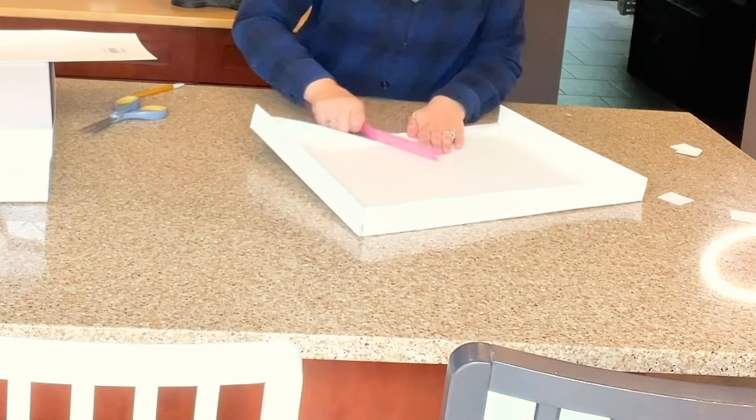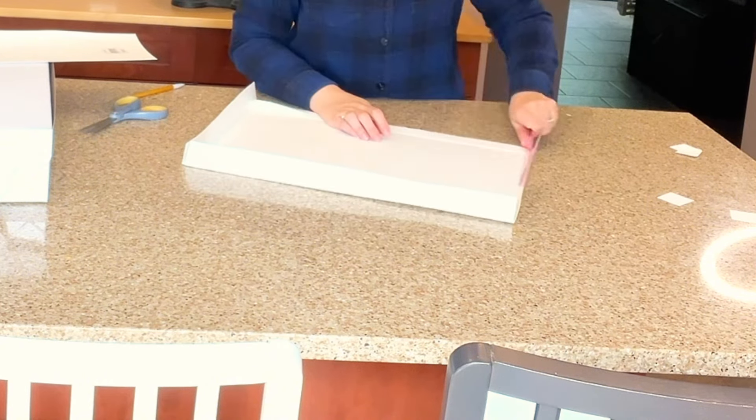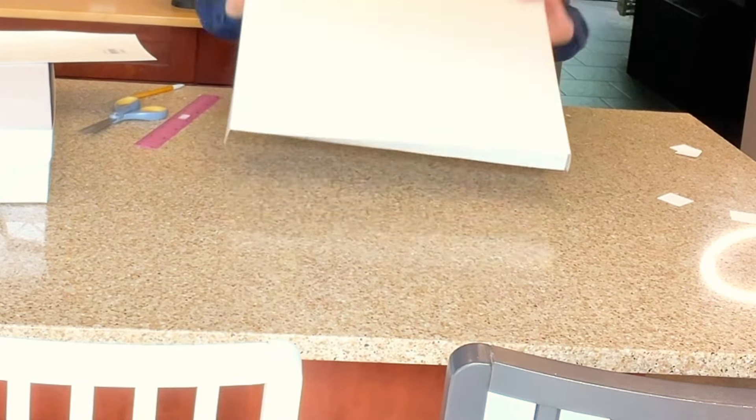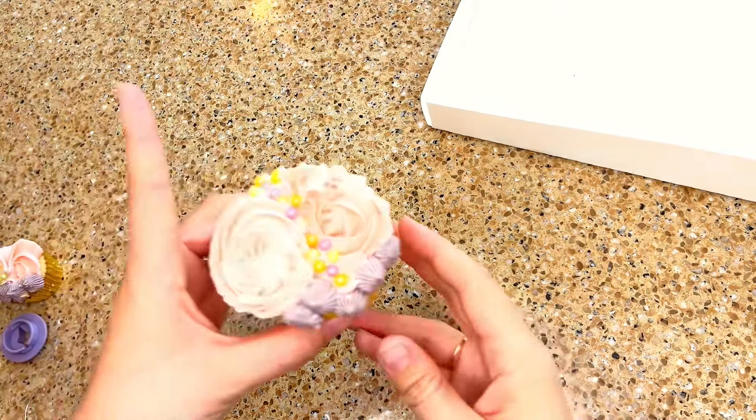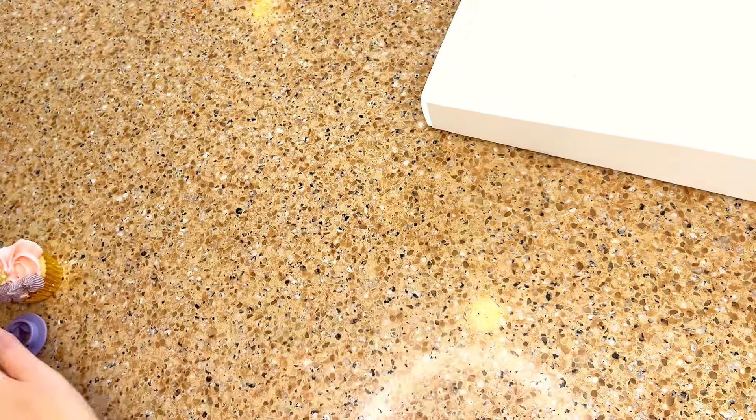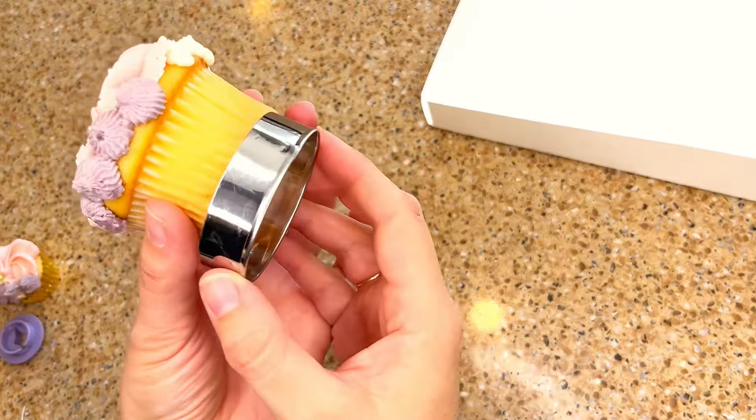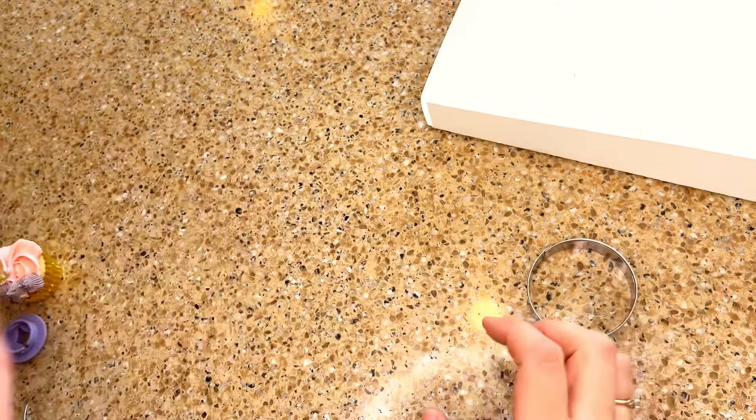Once all four sides are done, I'm left with a raised insert that should fit snugly inside the takeout box. Next I need to cut the inserts for my cupcakes. I'm going to grab my cupcake so I can use something slightly bigger than the bottom of my cupcakes to trace my circles.